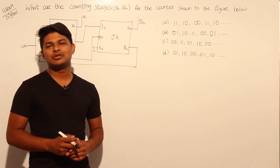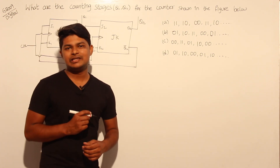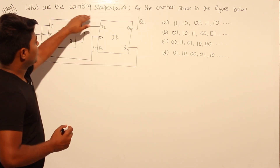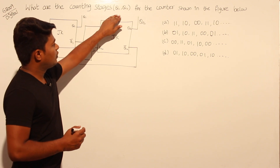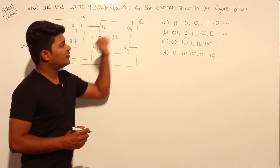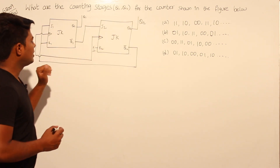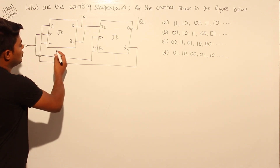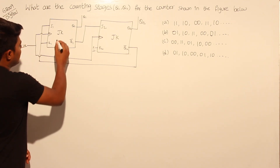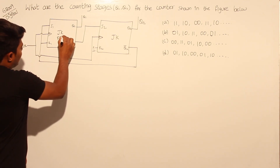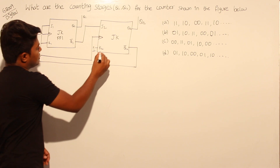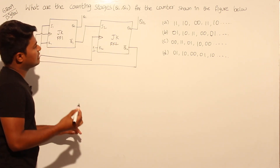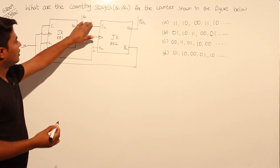This question is from GATE 2009, subject: Digital. What are the counting stages Q1 and Q2 for the counters shown in this figure? The figure consists of two JK flip-flops — this is JK flip-flop number one and this is JK flip-flop number two. They are asking for the counting stages Q1 and Q2.